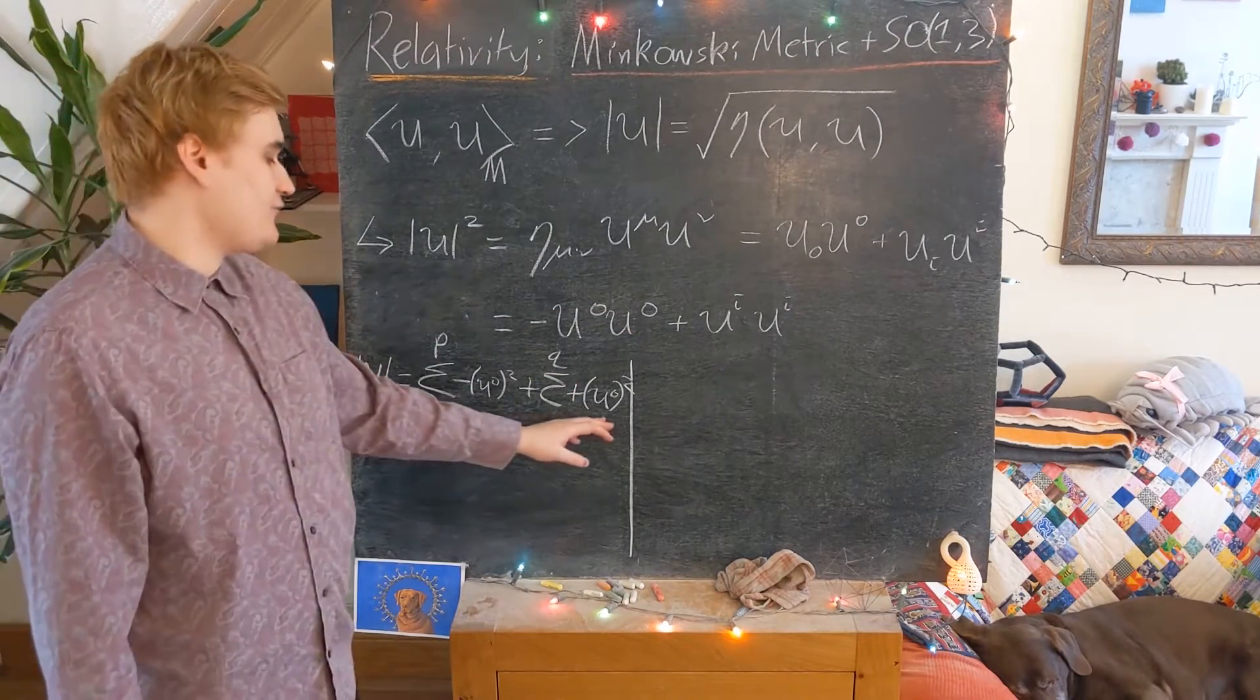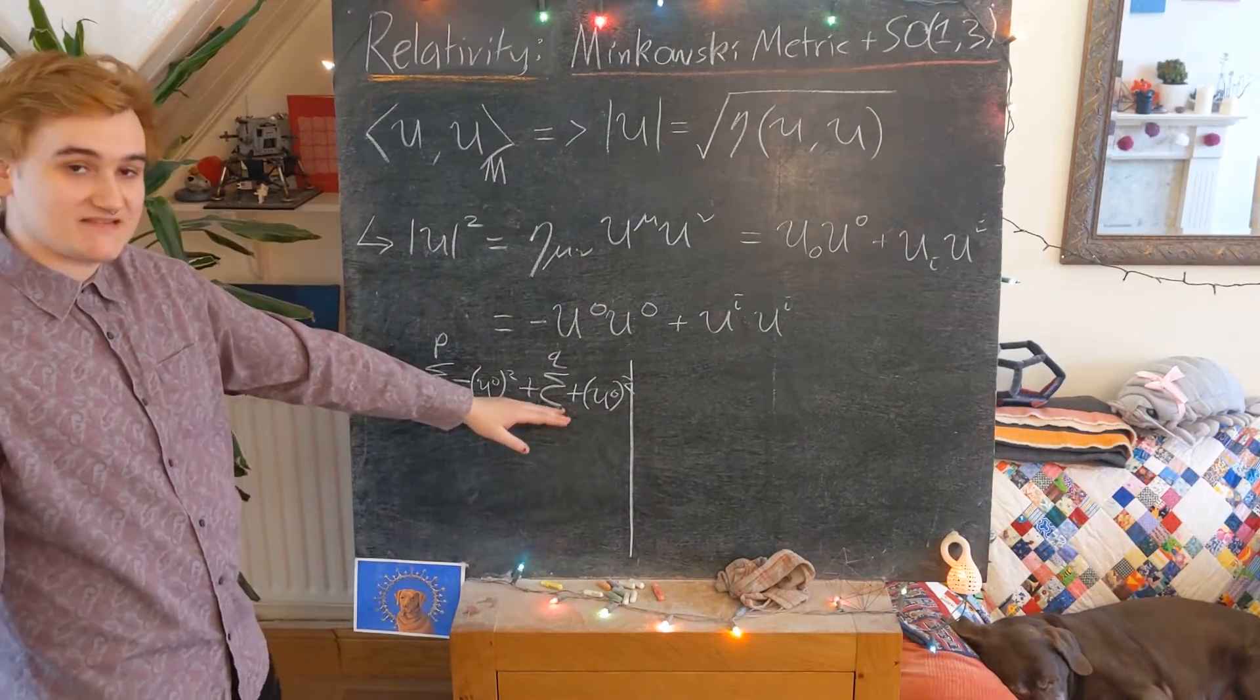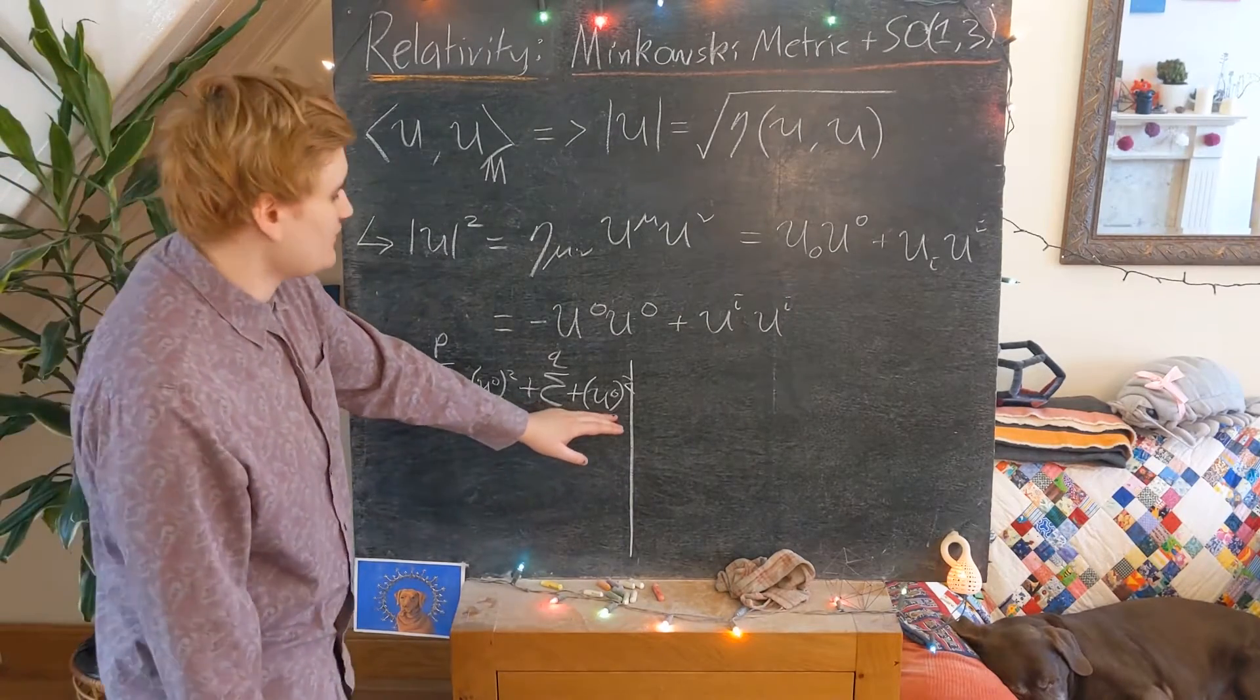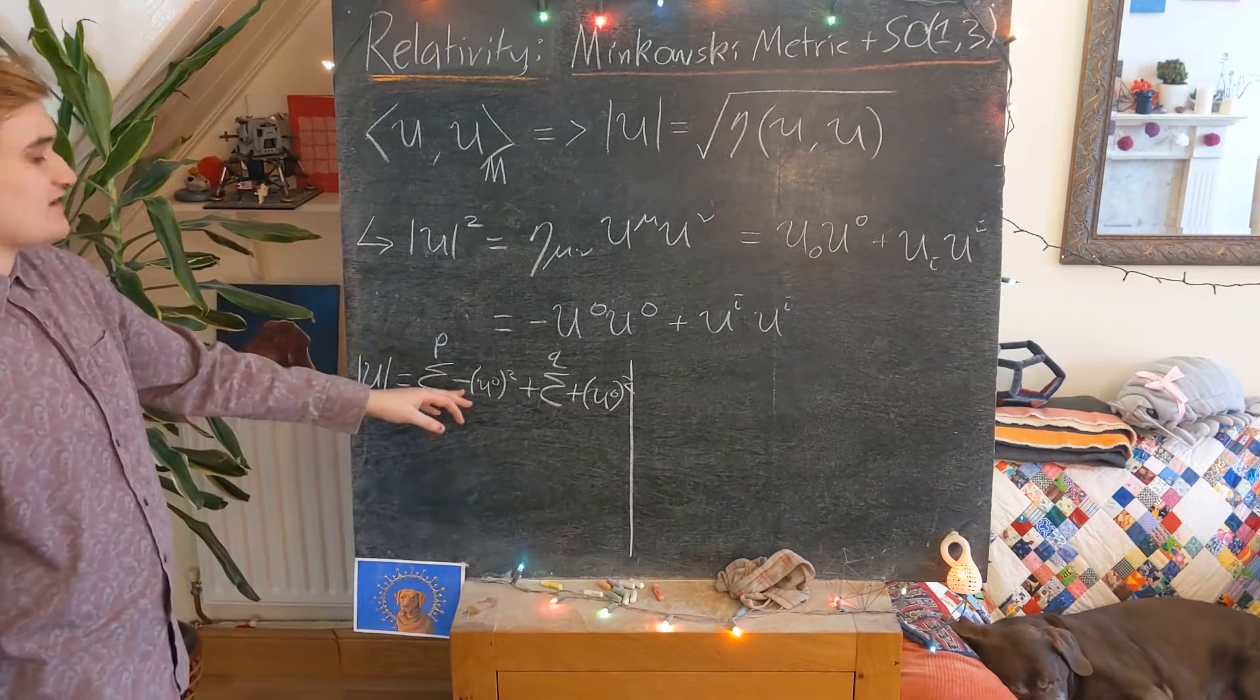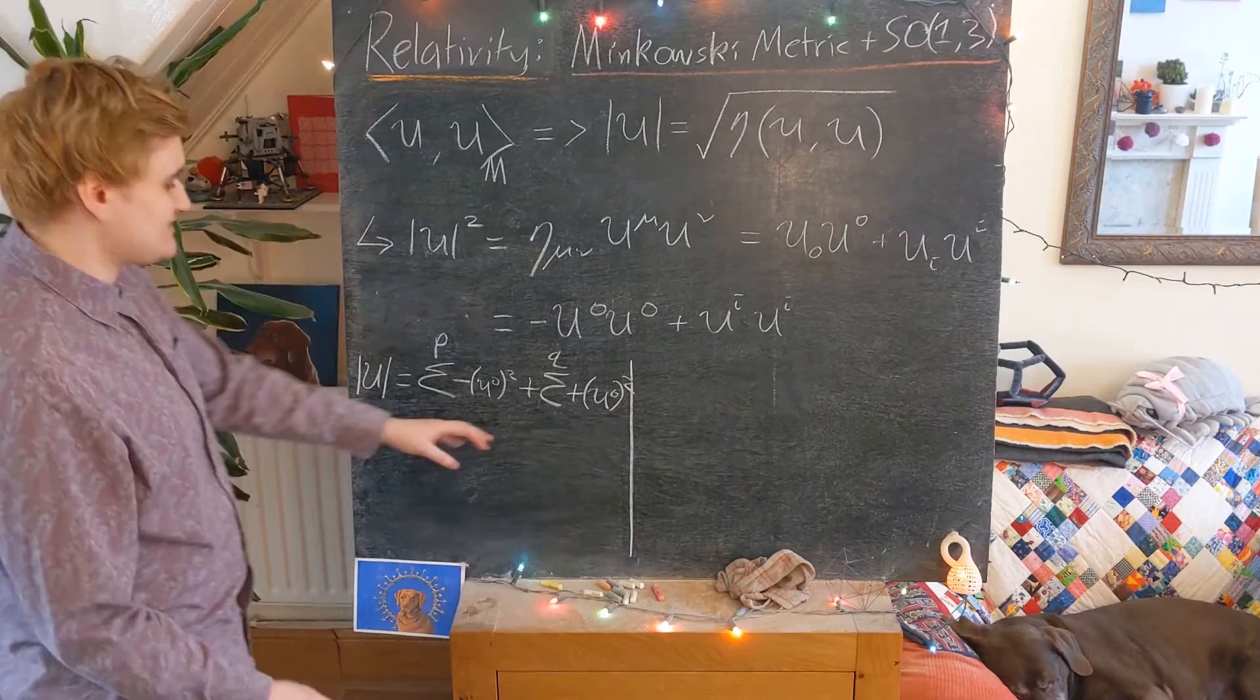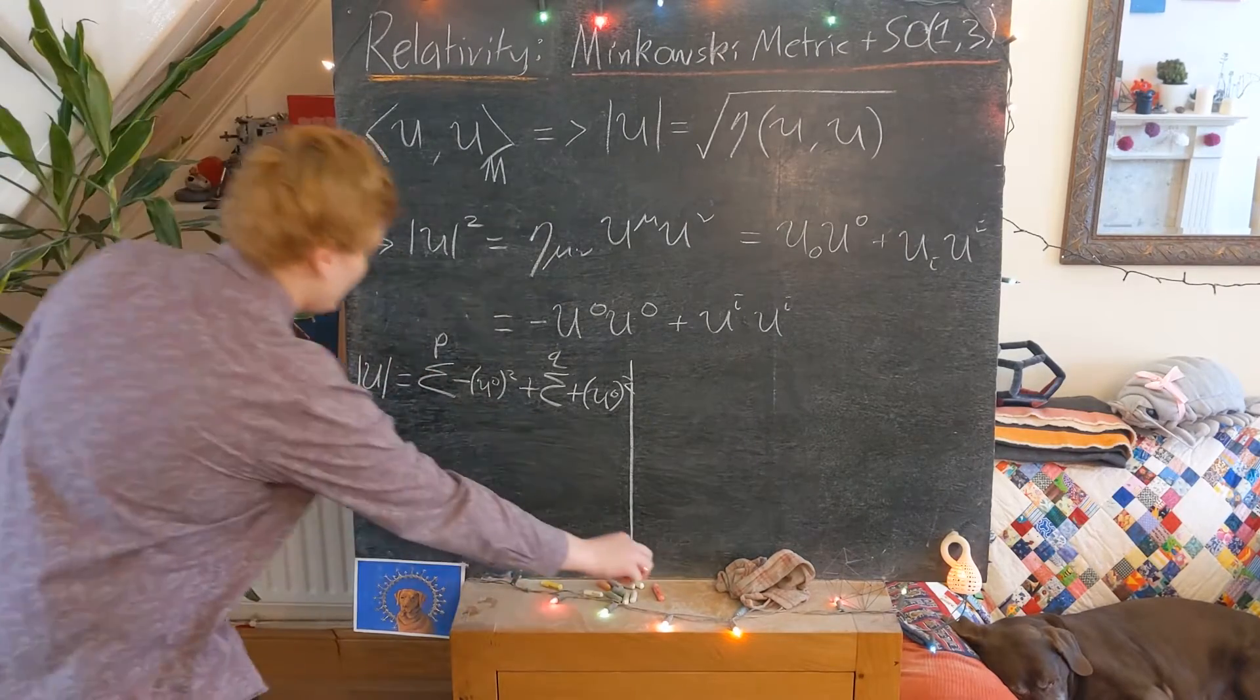And so if we just had purely pluses in here, we would say that this is a positive or a definite quadratic form. But because we now have some minus signs appearing in here, this is what's known as an indefinite quadratic form.